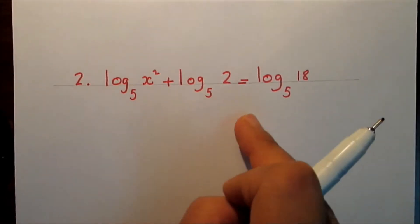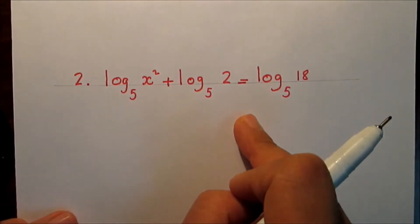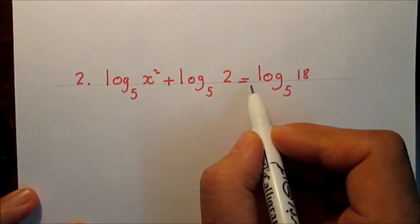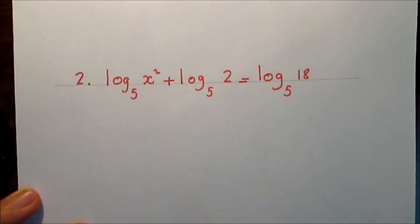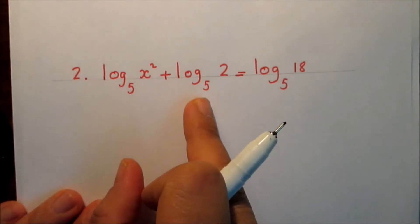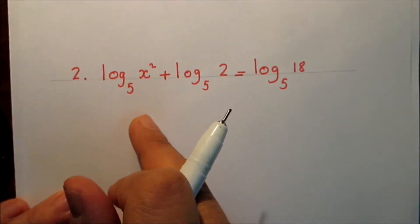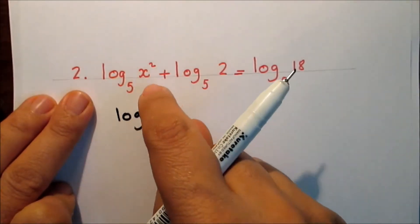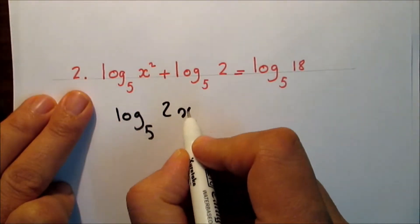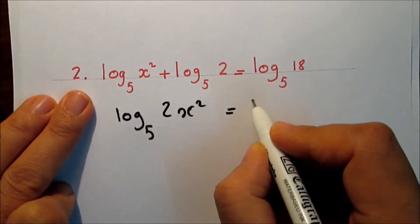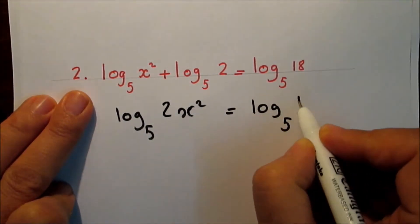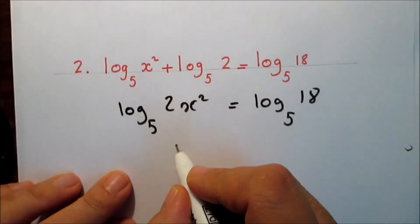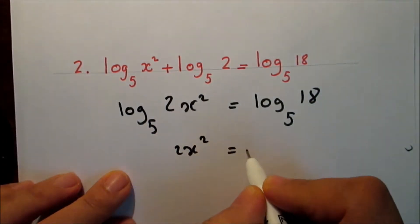Number two: Find in R the solution set of the following logarithmic equation: log base 5 of x squared plus log base 5 of 2 equals log base 5 of 18. Use the first law to turn the addition outside the log into multiplication inside the log. So we have log base 5 of (x squared times 2), which is 2x squared, equal to log base 5 of 18. Both sides have log base 5, so remove the log from both sides: 2x squared equals 18.